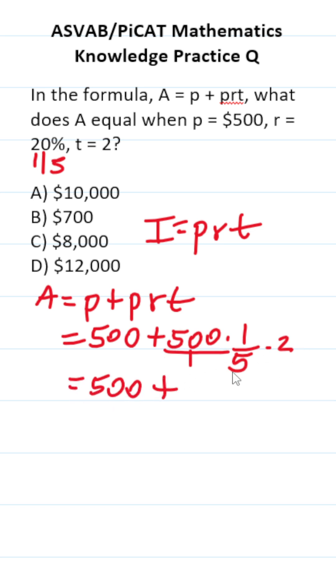Right here, I can write this as 500 over 1, which is going to enable me to cross-reduce. 5 goes into 5 one time, 5 goes into 500 one hundred times.